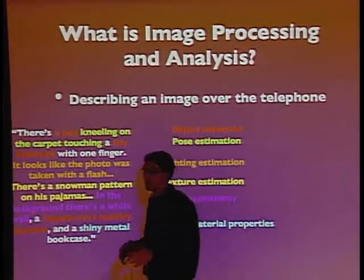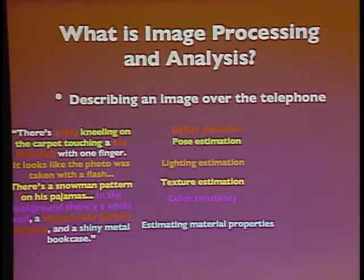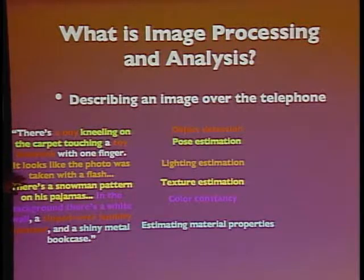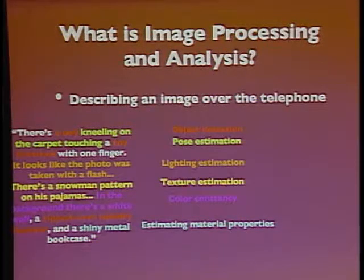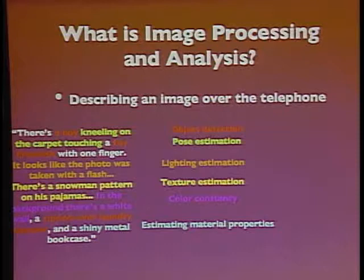Each one of the things I've highlighted is a different sub-problem of image processing and analysis. Detecting that it's a boy and not a tea kettle is called object detection. Describing the fact that he's kneeling on the carpet is called pose estimation — kneeling versus standing on one foot versus waving your arms are all different poses of the human body, and it's actually quite difficult to automatically detect. The snowman pattern on his pajamas is called texture estimation, or visual texture — being able to tell that something is plaid as opposed to polka dots by looking at it. And the fact that we wear textured clothing is one of the things that makes pose estimation so difficult.